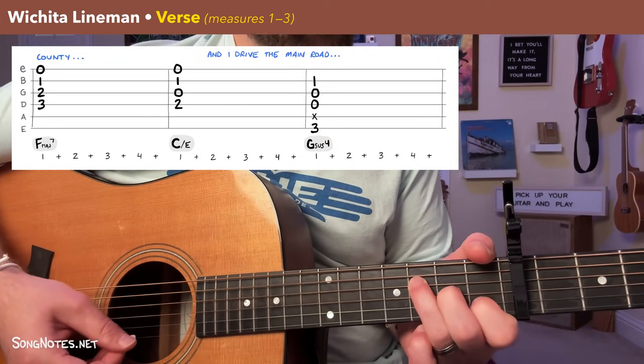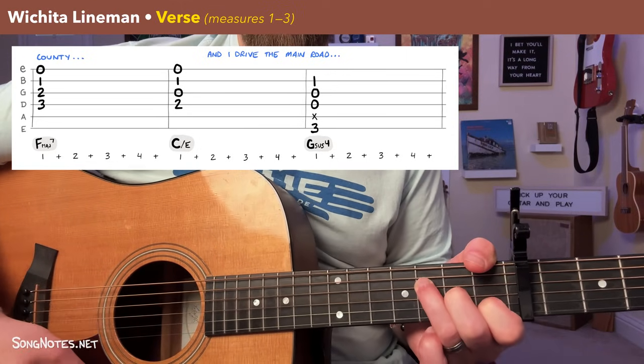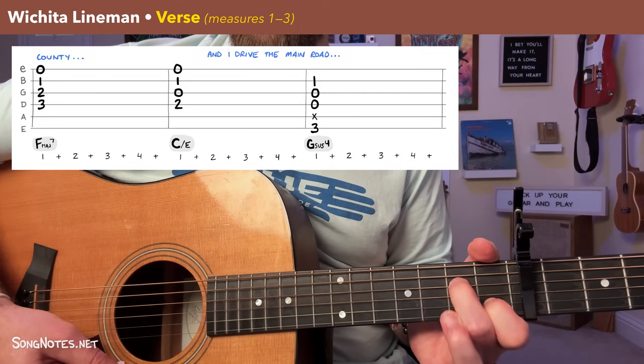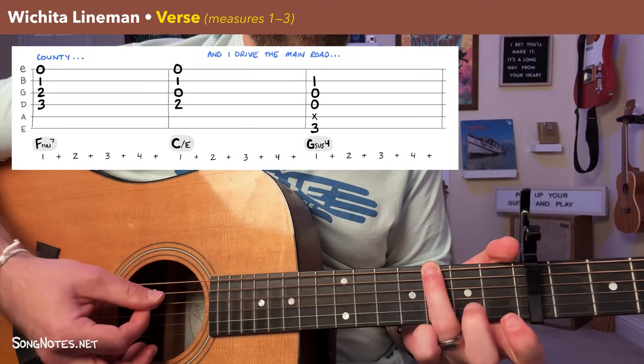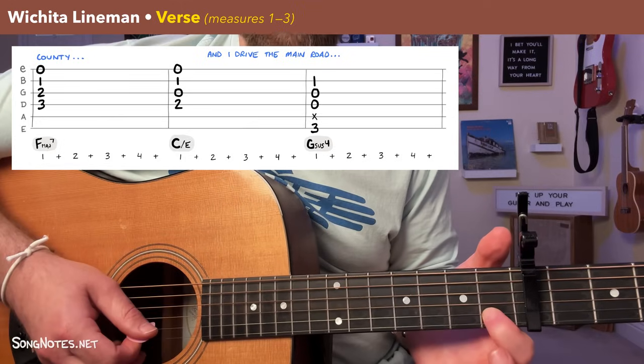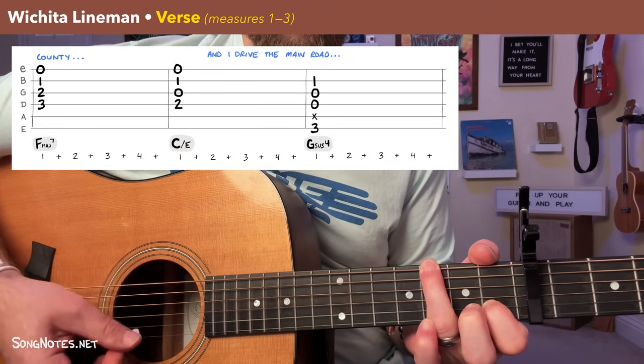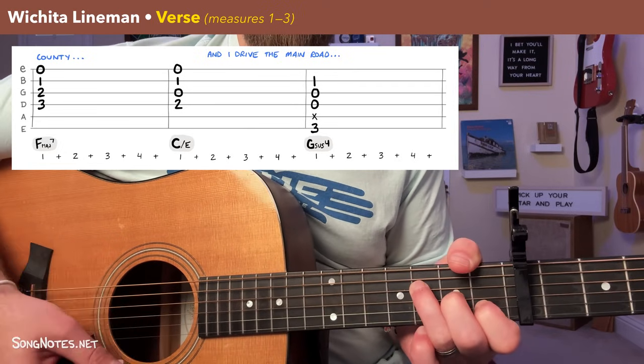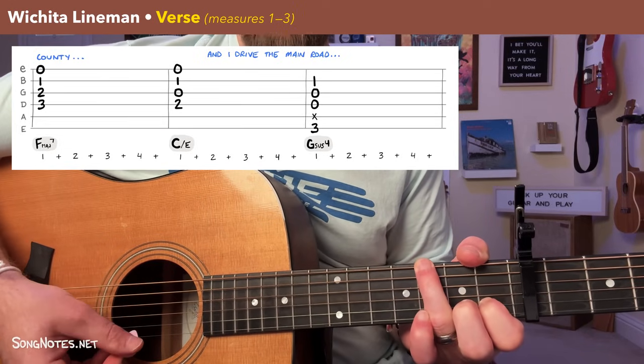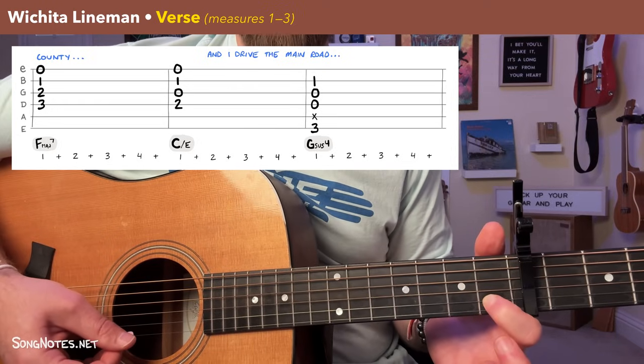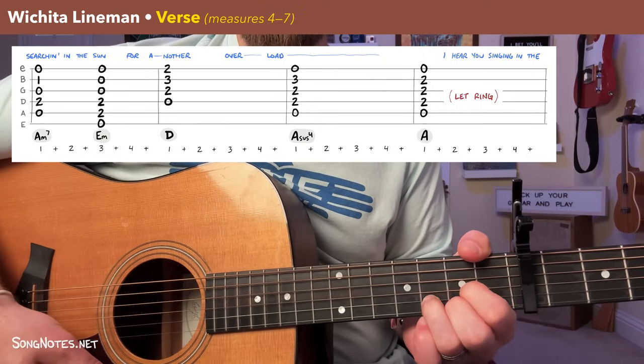The F major seven, it's just third, second, first frets on the fourth, third, second string, and you leave the thinnest string open. So thinnest four strings only is our F major seven. Then again, thinnest four strings for the C over E, second, open, first, open, and then the G sus four. So I'm putting my ring finger down, I'm muting the fifth string, my index finger stays where it was for the previous two chords. Notice that. My index finger. If we were to sing, I am a lineman for the county, and I drive the main road. So this is our sort of repeating droning note through all those chords. We're gonna keep that finger there for the A minor seven. Searching in the sun for another overload.